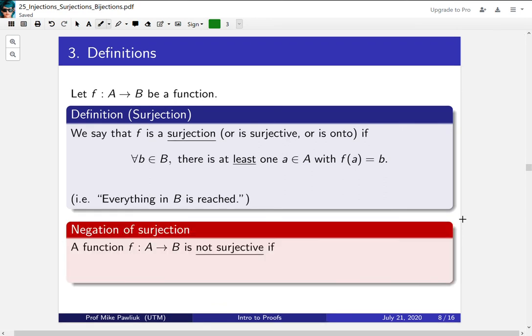Now again, take a moment to write down the negation of what it means for a function to not be surjective. Well, if you are not surjective, it means there is something in the codomain, such that for everything in the domain, it does not reach it: f(a) ≠ b.